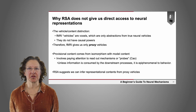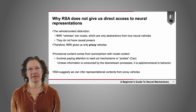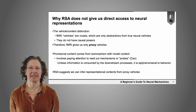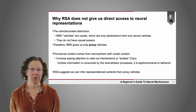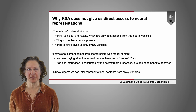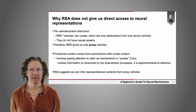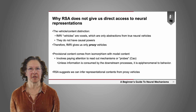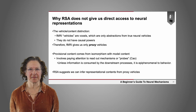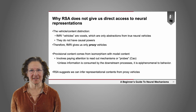Our notion of content is also provisional because it comes from an isomorphism with the content of our models — the content we can ascribe is only as good as our model content. Understanding content also requires attention to readout mechanisms and probes we can devise. Unless we know that information is consumed by downstream processes, it could be epiphenomenal to behavior and not truly part of the representation driving intelligent behavior. So there are reasons to be cautious about inferring content from RSA, though it does suggest we can infer approximate representational contents from proxy vehicles.